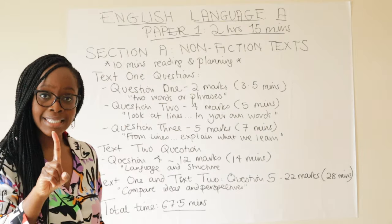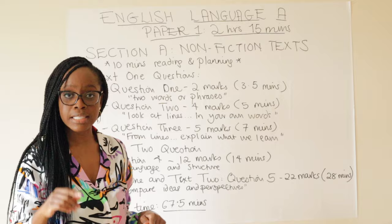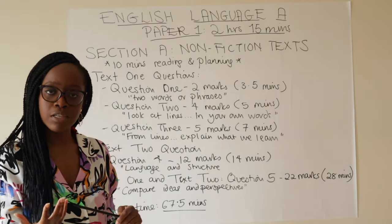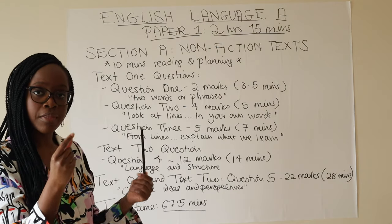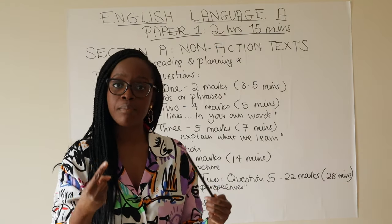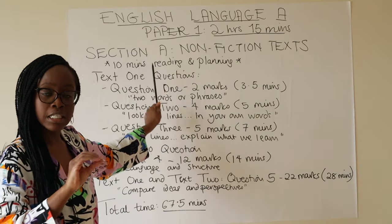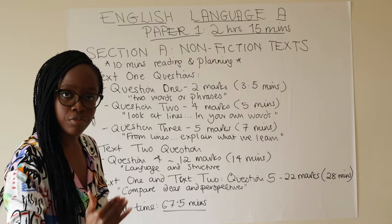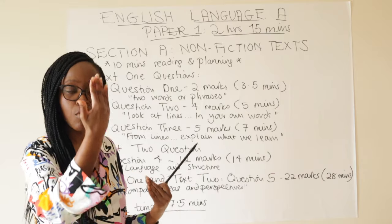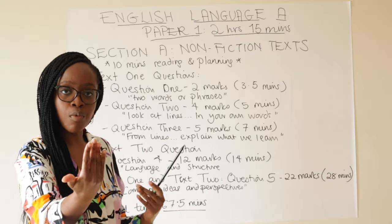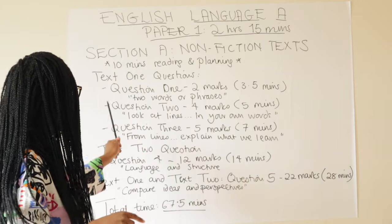In terms of timing, because you're seeing the unseen text for the first time, allocate the first 10 minutes of your exam time to reading through it, planning, highlighting, and really thinking about the similarities it shares with the seen anthology text you'll be asked to compare it to. Spend those first 10 minutes reading, highlighting, and picking up on the commonalities and themes between the two texts.